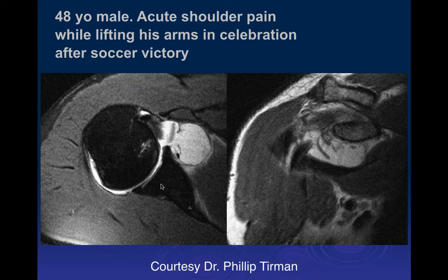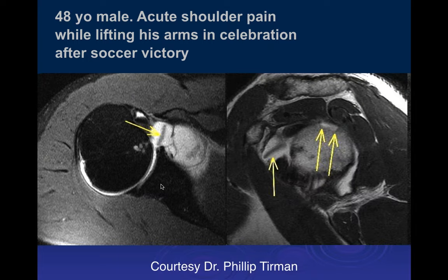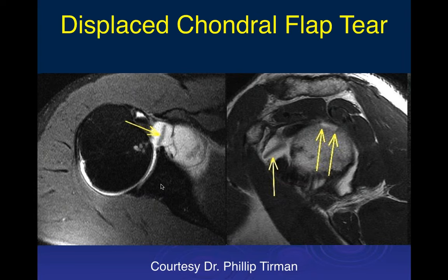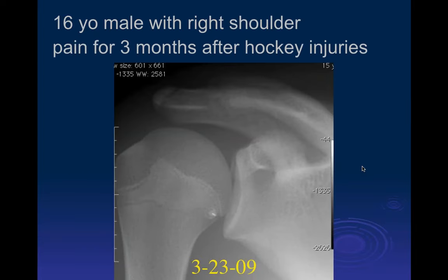There's a low signal intensity curvilinear structure — a loose body floating in the joint fluid. That's actually a fragment of cartilage, a chondral injury with a displaced chondral fragment from throwing his arms up in the air. You have to look for loose bodies; in some situations these can be focal chondral fragments. It's important to document location and size.